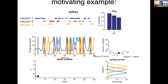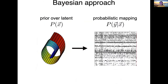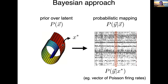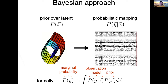How do we construct such a model? We build it in a Bayesian way. Let's denote the latent by X and the spikes by Y. A Bayesian approach assumes a prior distribution over X and a probabilistic mapping P(Y|X). The task is to infer the latent X and the mapping P(Y|X). We can write the marginal probability P(Y) as the integral of P(Y|X) multiplied by P(X) over X.